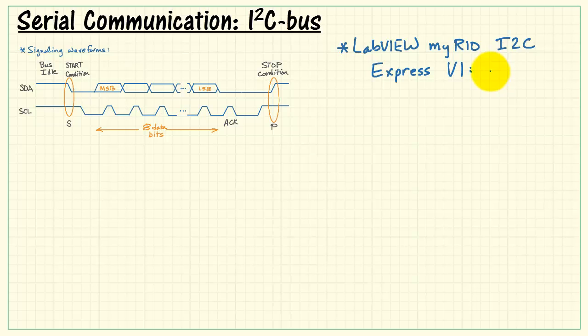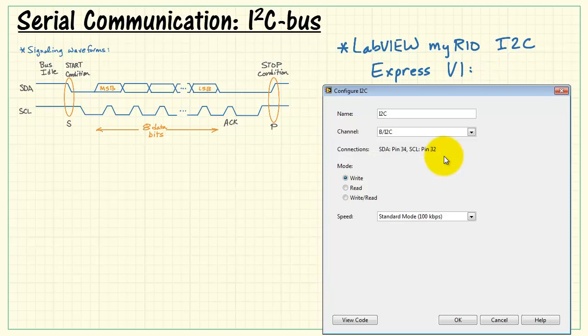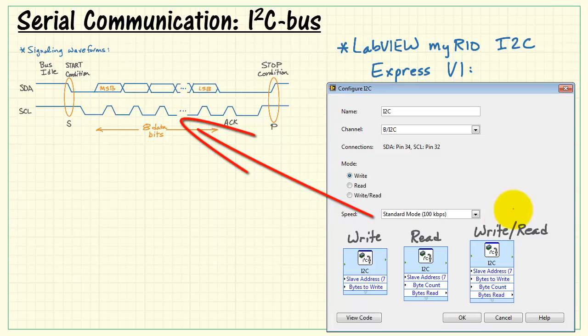Now let's take a look at the LabVIEW MyRIO I2C Express VI and see how that relates to some of the waveforms that we've just seen. You can choose the connector, either A or B. This is a reminder of the pin numbers for the I2C signals. You have the three different modes, and then you also have the two possible data rates for the bus: standard mode and fast mode.